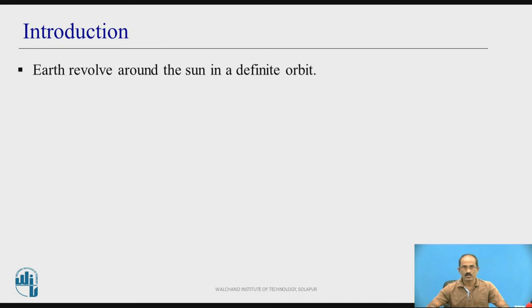Introduction: Earth revolves around the sun in a definite orbit. This is a fact we know. Earth always revolves around the sun in a particular orbit.